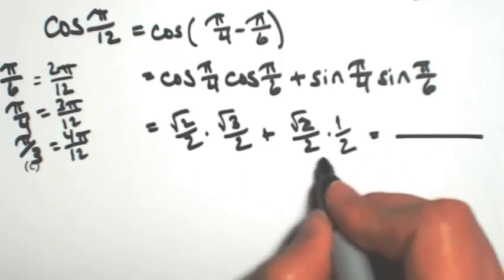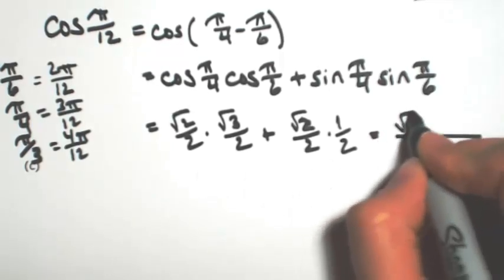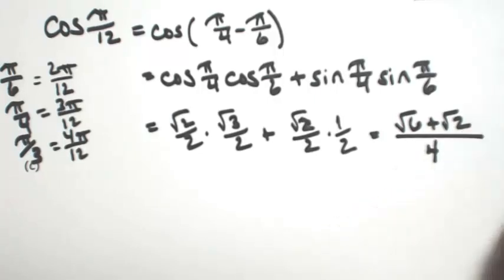So putting this together with our common denominator of 4, I would get square root of 6 plus the square root of 2.